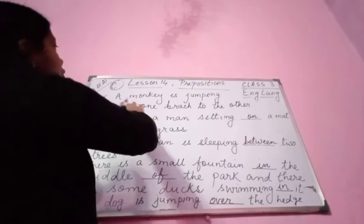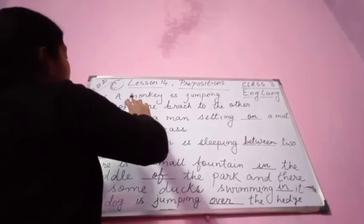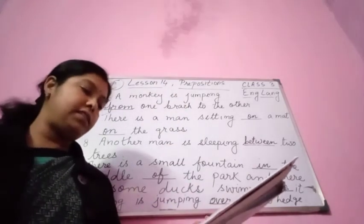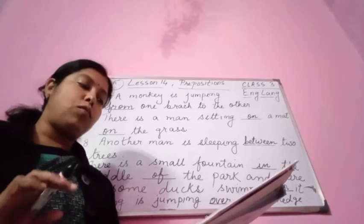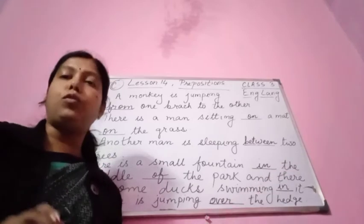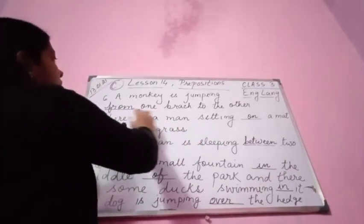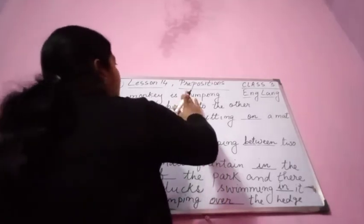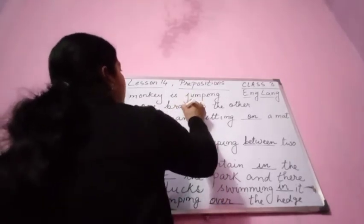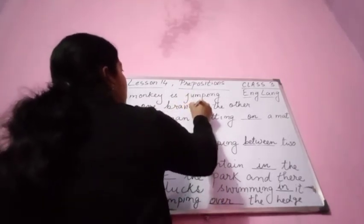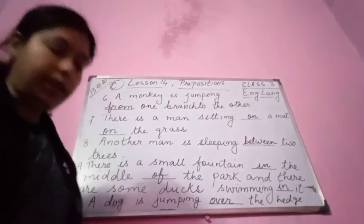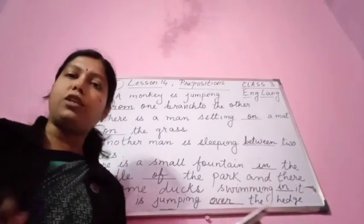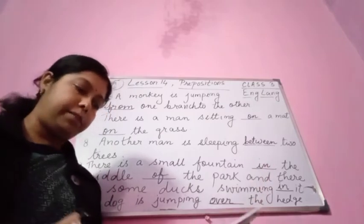Number 6: a monkey is jumping from one branch to the other. A monkey is jumping from one branch to the other. Please refer to the picture given here on page 89.